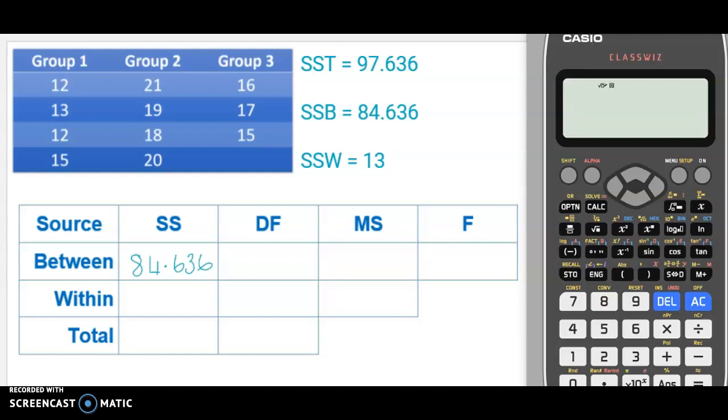Our sums of squares within, we calculated with what was left over. And our sums of squares total is where we started, and that was 97.636.